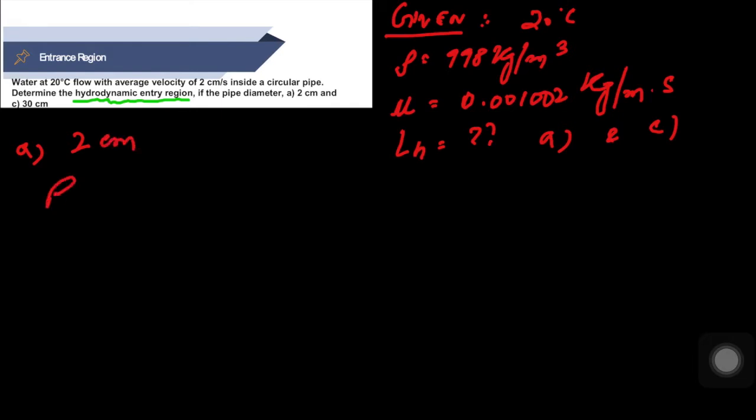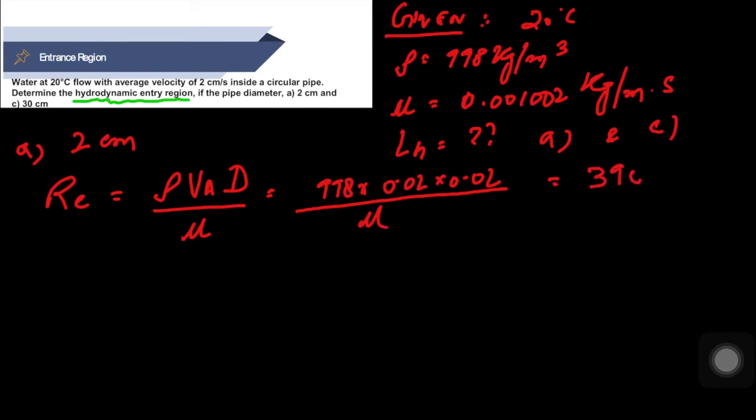When the pipe diameter is 2 centimeter, the Reynolds number Re = ρVD/μ. This comes out to be 998 × 0.02 × 0.02 (this is the velocity 0.02 meter per second and the diameter is 2 centimeter equals 0.02 meter) divided by 0.001002, which equals 398.